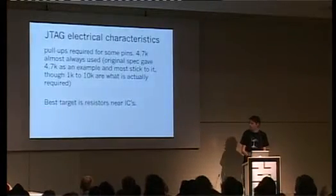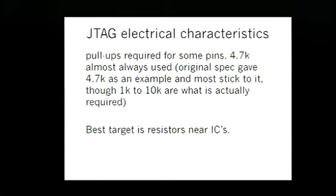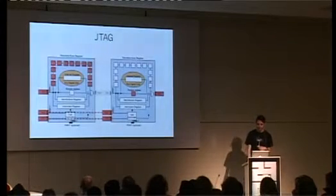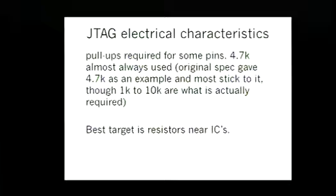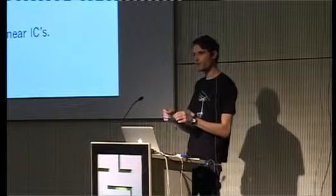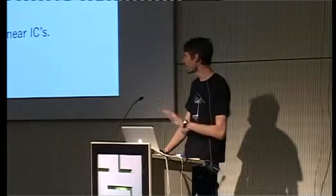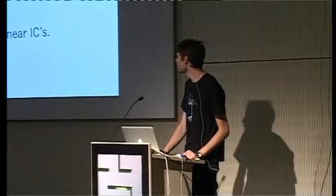Regarding the electrical characteristics for JTAG: some pins have a pull-up resistor. The original specification used 4.7k, and in many cases I do find they use 4.7k. So if you're looking at resistors on your PCB and you find some 4.7k resistors, that might be an interesting place to look — especially if you don't have any vias or pins around.